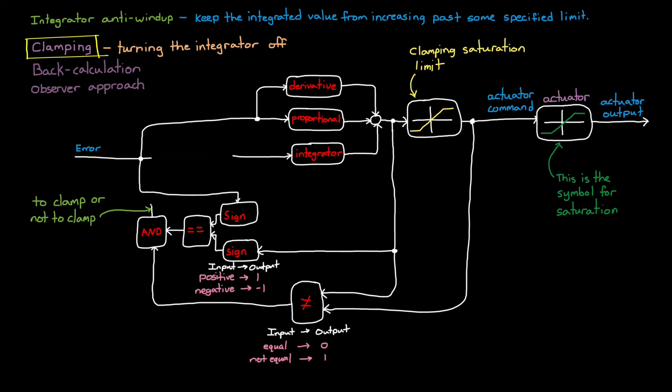If the decision is to clamp, that is the output of the AND gate is a 1, then a switch is triggered and the error term in just the integral path is set to 0, effectively shutting down integration. And once the error changes sign, or the controller is no longer in saturation, the input into the integral is restored and the value immediately begins to decrease. This is also referred to as conditional integration because our controller will shut down the integrator if it meets certain conditions.